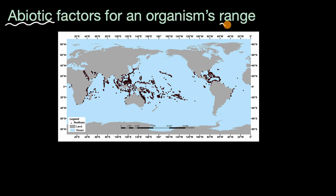What do we mean by range? In everyday language, you might say where do you go — and it's a similar meaning here. An organism's range is the geographic area where the organism can live.